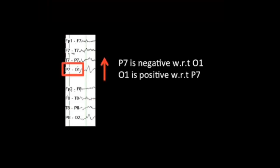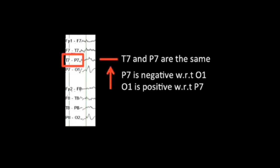In the P7O1 channel, there is an upward deflection. Using our polarity rules, this means that either P7 is negative with respect to O1, or O1 is positive with respect to P7. Let's look at the additional channels.